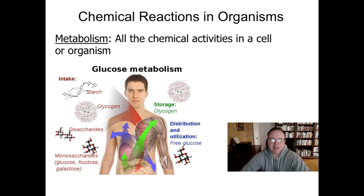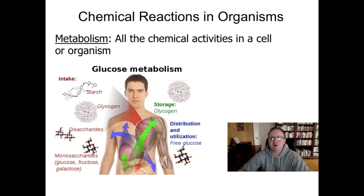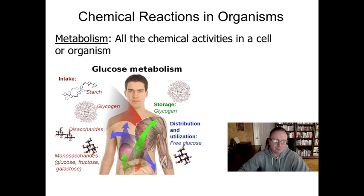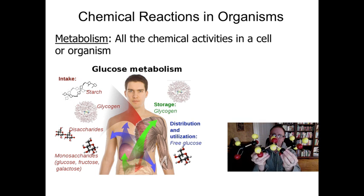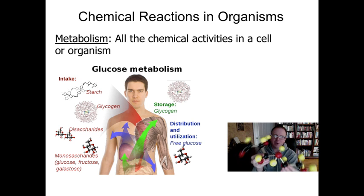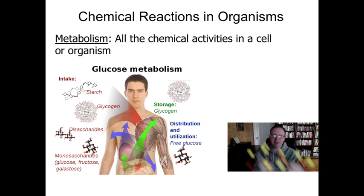The first main idea that we'll discuss together is metabolism. Metabolism can be defined as all the chemical activities in a cell or in an organism. We sometimes refer to it as the sum total of all the chemical reactions that go on inside a living thing. The diagram on this page gives us an example of glucose metabolism. Glucose is the key energy molecule that our cells use — this is what charges up your battery when it's dead. We oftentimes refer to this as a simple sugar.